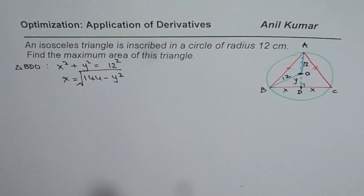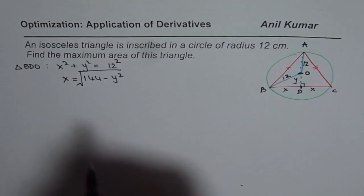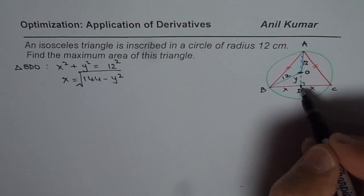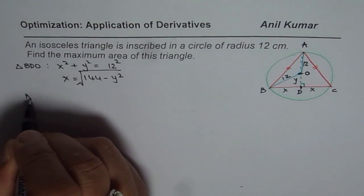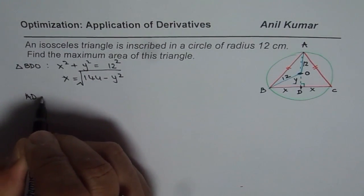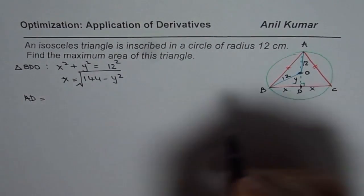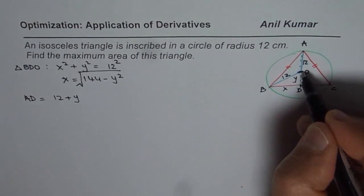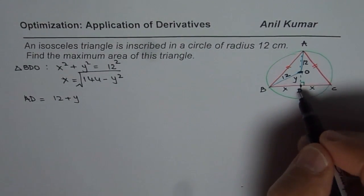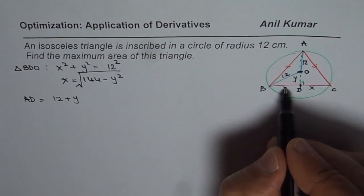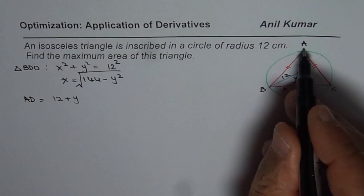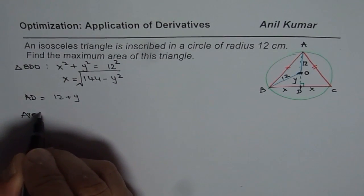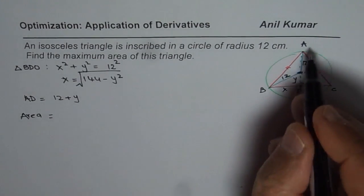Now let us find the height of the triangle, which is AD. AD will be equal to 12 plus Y — since OD is Y. Knowing X and Y, we can write down the area of triangle ABC.